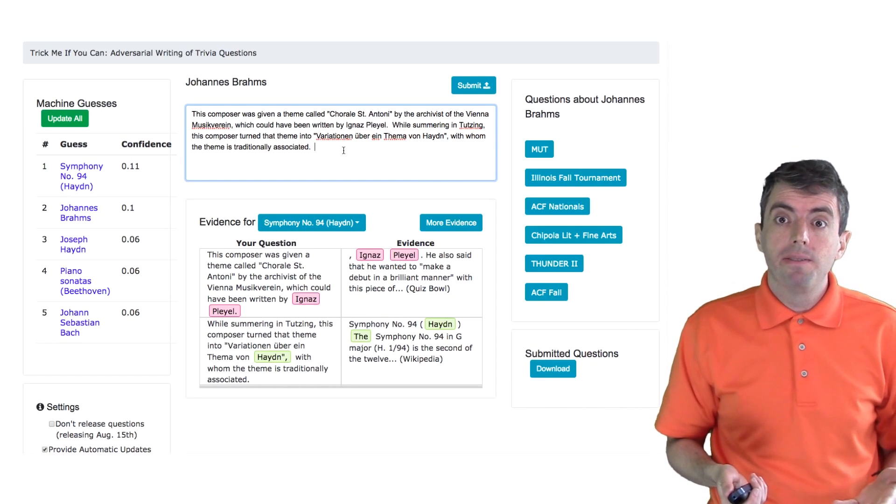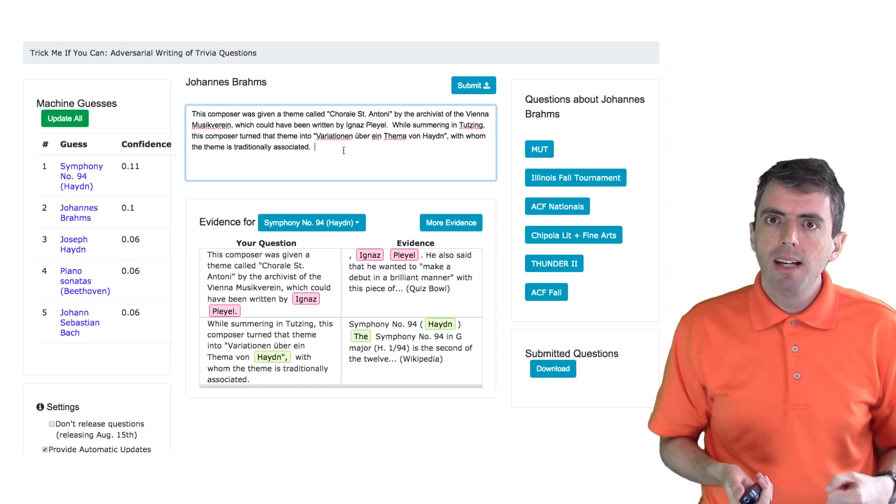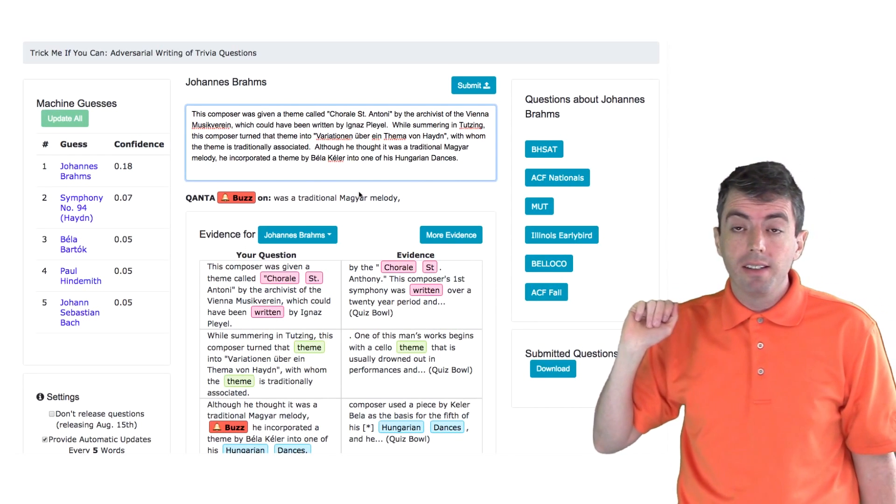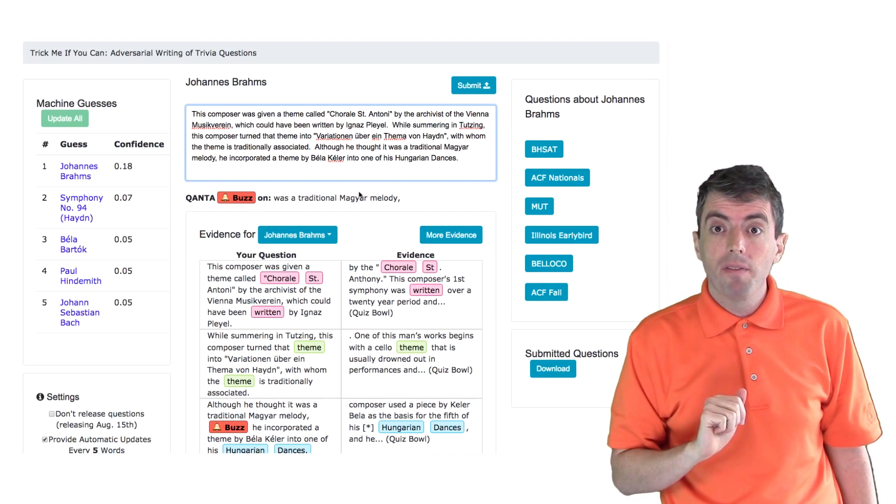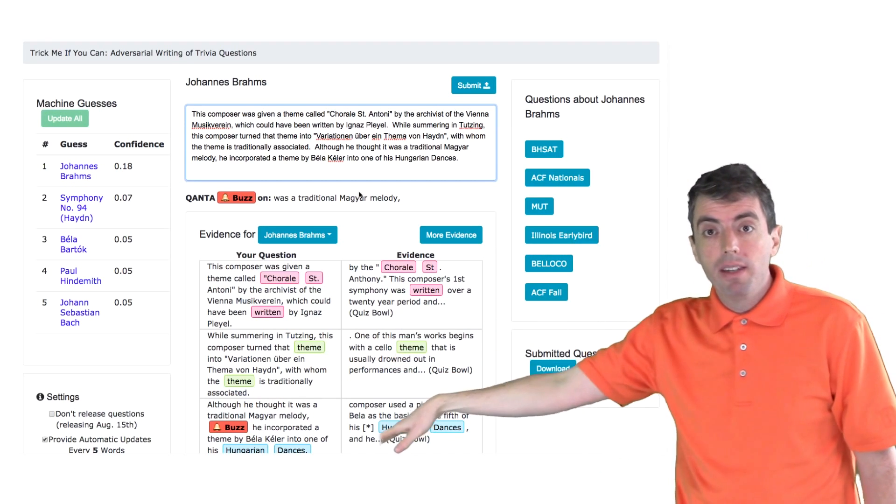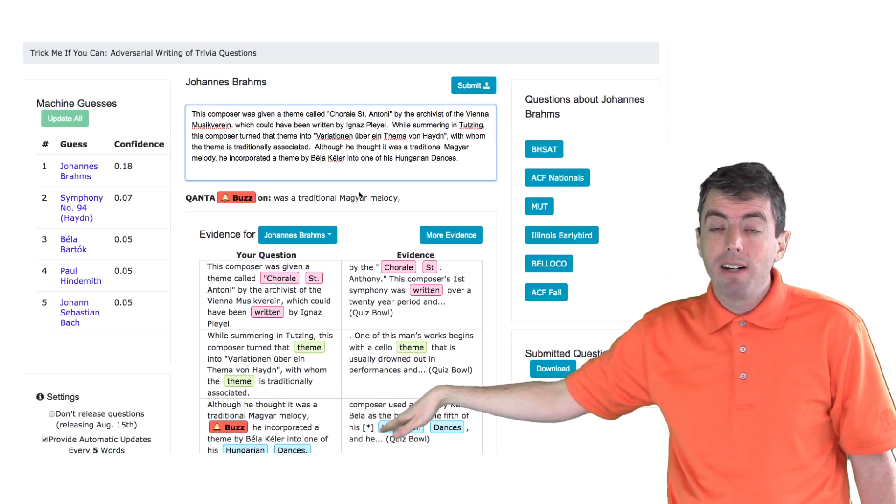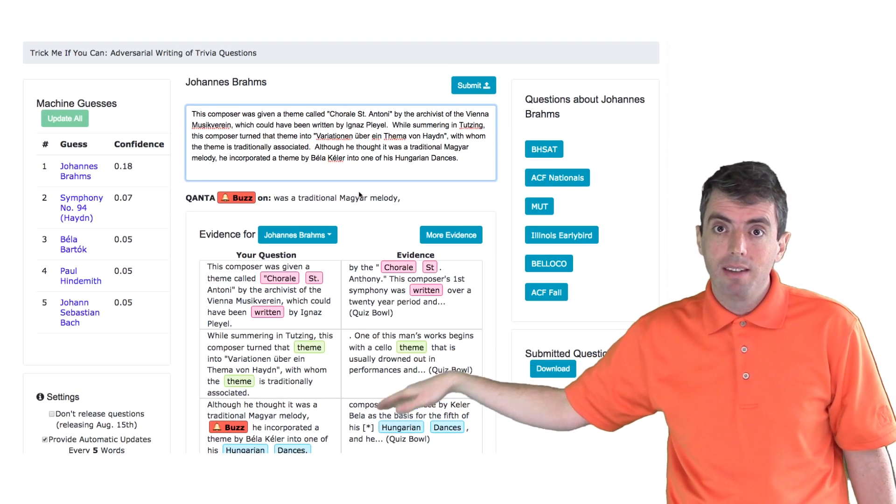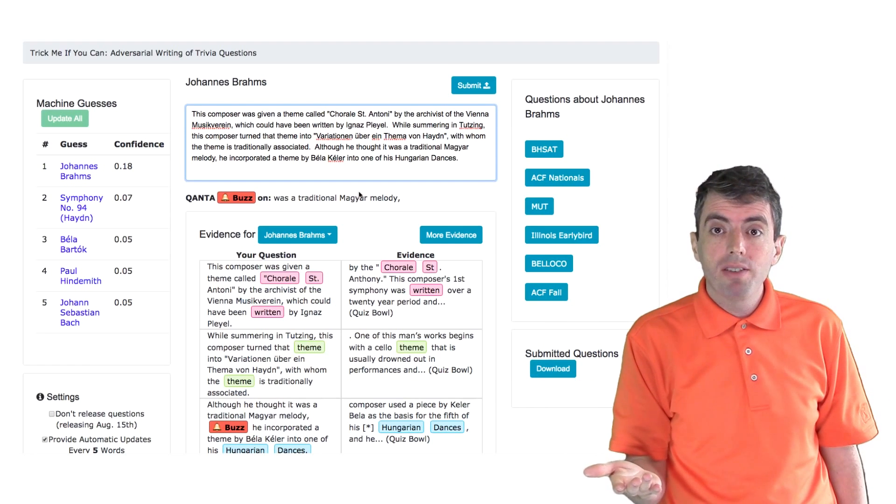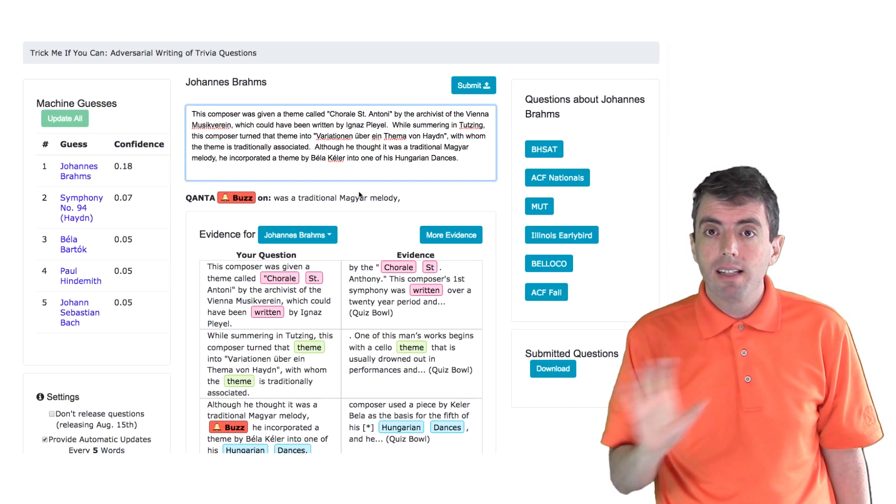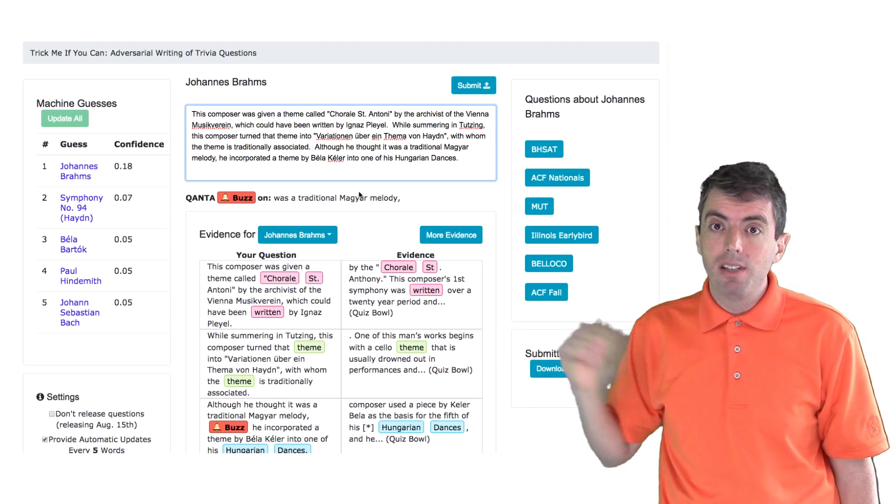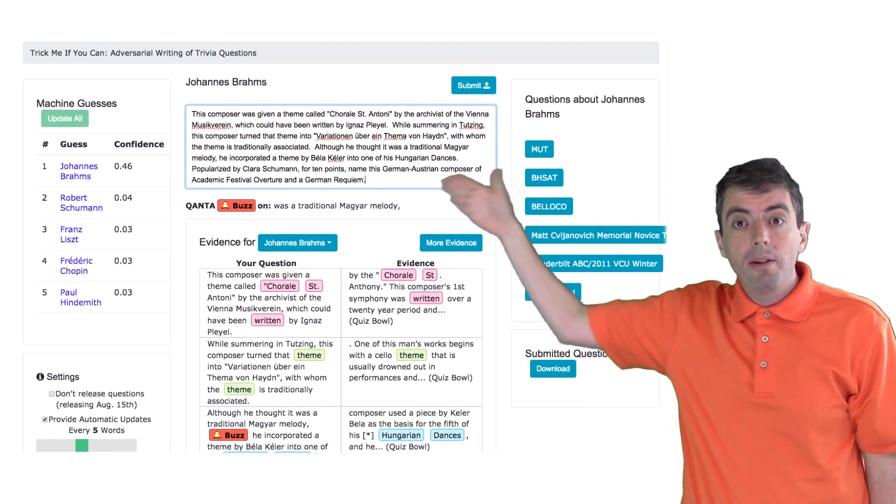So while we're talking about musical influences on Brahms, let's go a little bit further and we'll talk about Hungarian dances. So we'll put in an additional sentence that talks about where he got some of the Hungarian dances from. So it finally will buzz on Magyar Melody, and so this clue down here is the one that finally allows it to put all the pieces together and buzz with Brahms and get it correct.